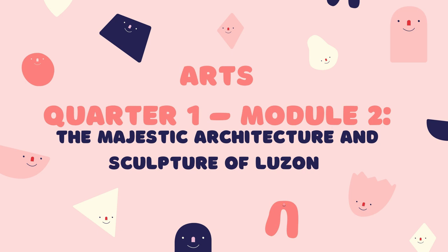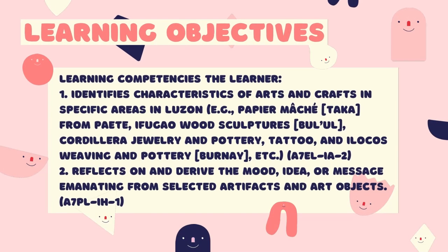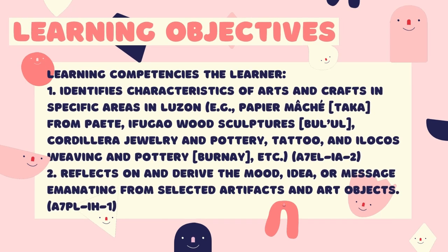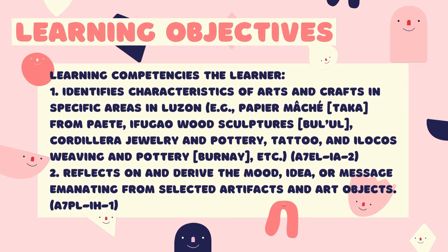Please accomplish all the activities and answer all the questions. Quarter 1 Module 2: The Majestic Architecture and Sculpture of Luzon. Learning Competencies: The learner identifies characteristics of arts and crafts in specific areas in Luzon — for example, Paper Maché from Paete, Ifugao Wood Sculpture or Bulul, Cordillera Jewelry and Pottery, Tattoo, and Ilocos Weaving and Pottery (Burnay). Number 2: Reflect on and derive the mood, idea, or message emanating from selected artifacts and art objects.